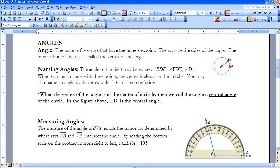So we can name it either angle EDF or FDE. Or, in this case, since there's not really a lot of other angles around that are less than 180 degrees, we could call it just by angle D.